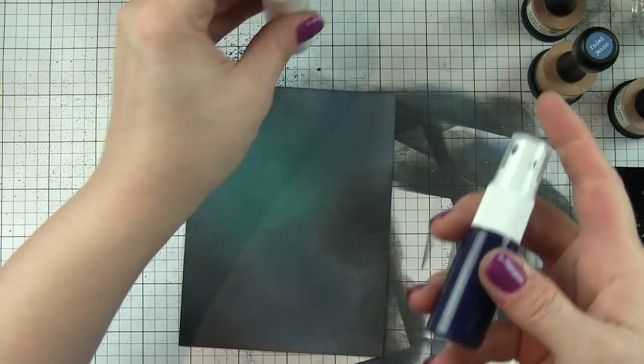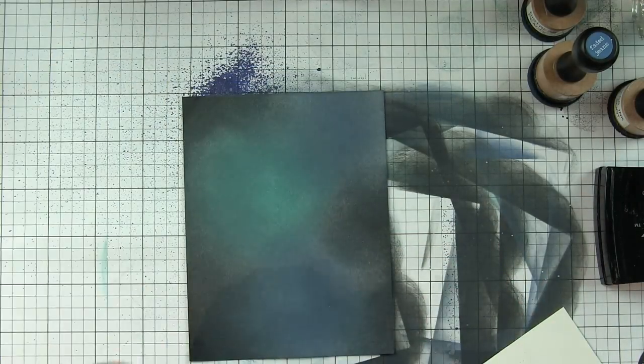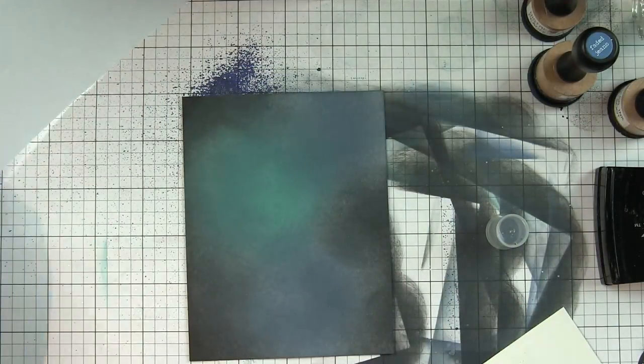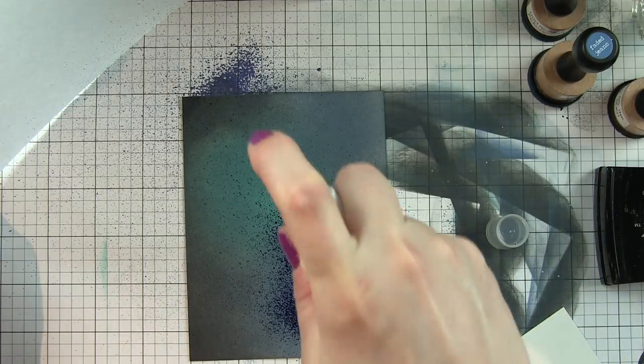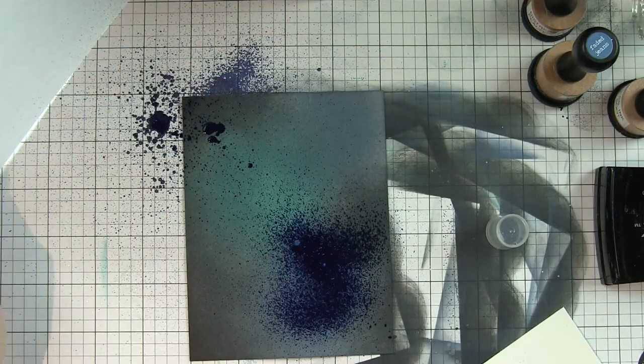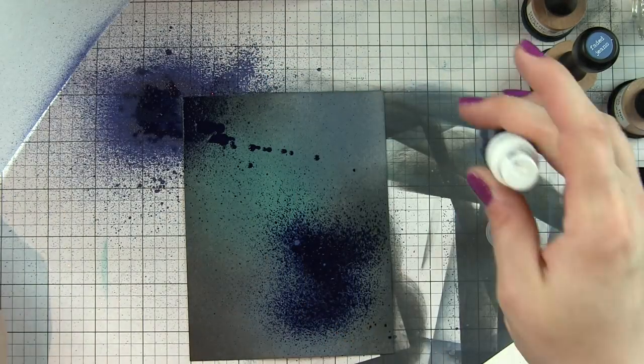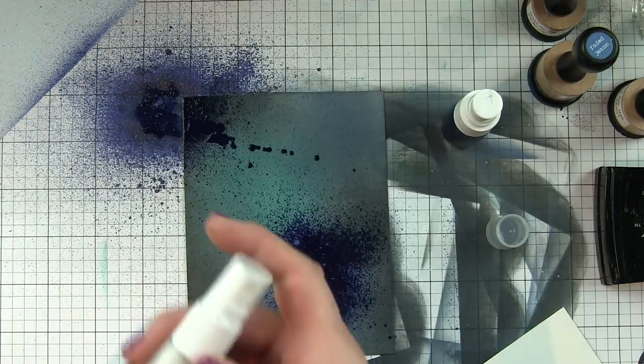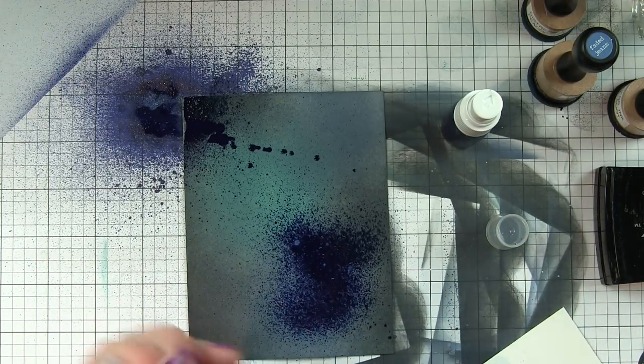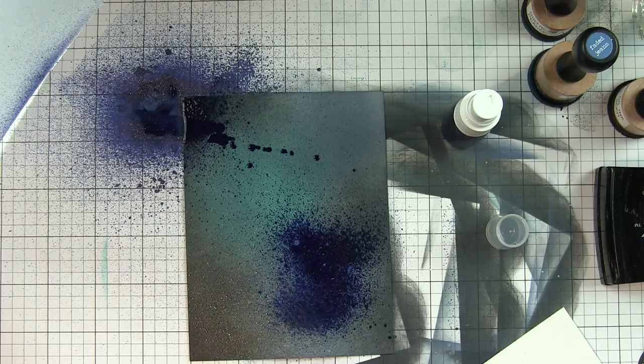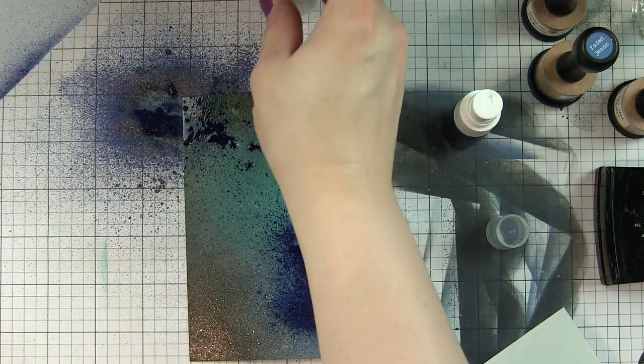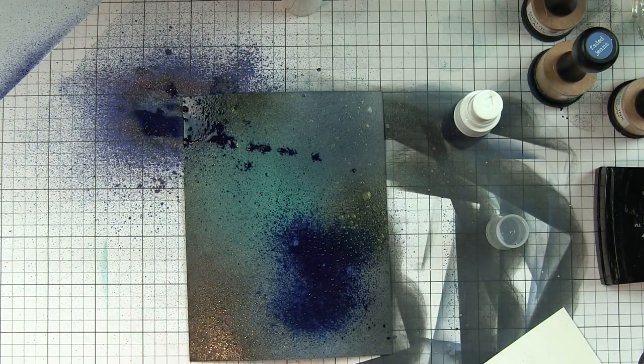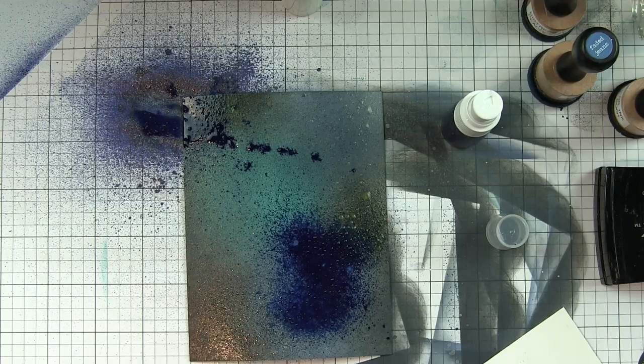I'll spray my background and then kind of up in that upper left corner. Messy is better. It is a liquid, so the distress oxide inks that were applied first will react with the liquid product here.